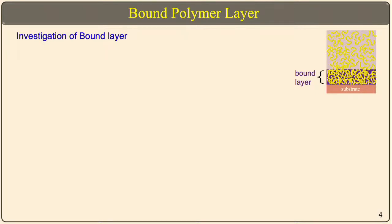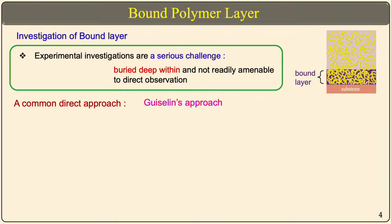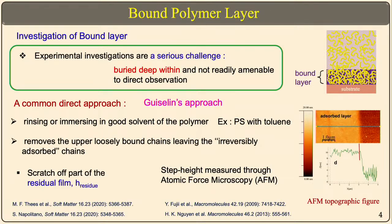In this talk I focus on investigation of this bound layer. Since the film overall is in nanometer thickness, determining this bound layer is quite challenging. However, there is a very common approach known as the Guiselin's approach, where you take the polymer film and rinse it in a good solvent — for polystyrene, that would be toluene. Initial studies took the polymer film and emerged it in a good solvent to determine the layer. This atomic force microscopy topography image shows the adsorbed layer. You scratch off the non-adsorbed part to determine the step height — it is a destructive kind of measurement, but gives one way to estimate the adsorbed layer.